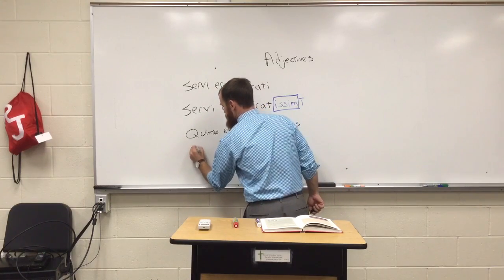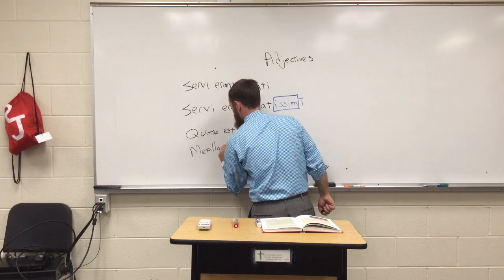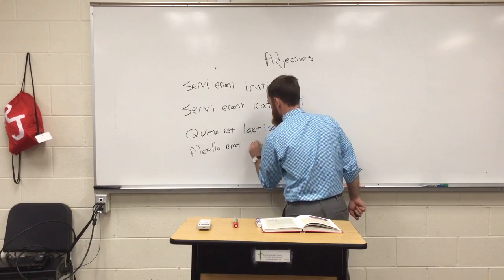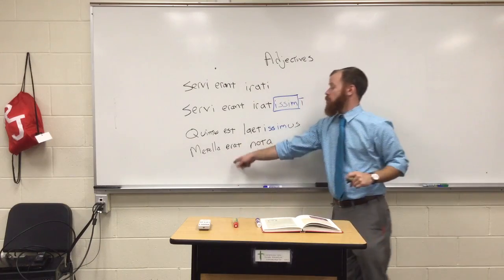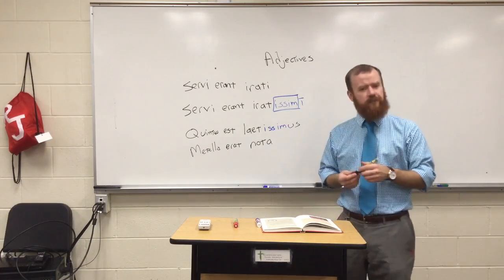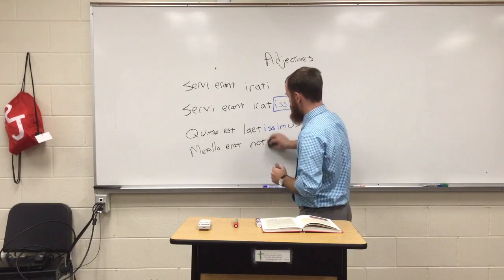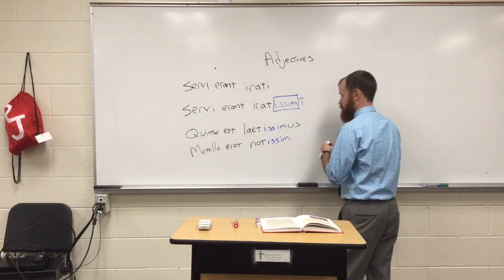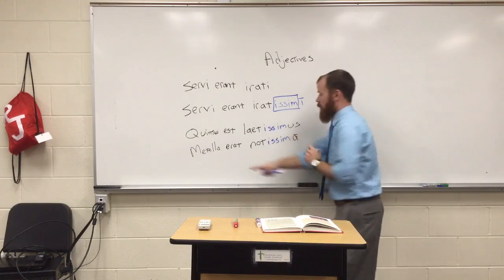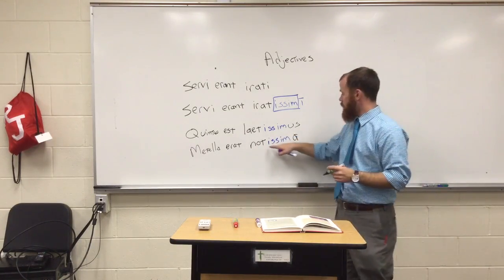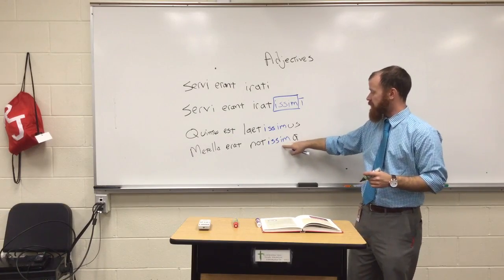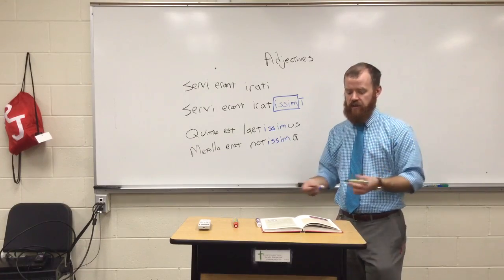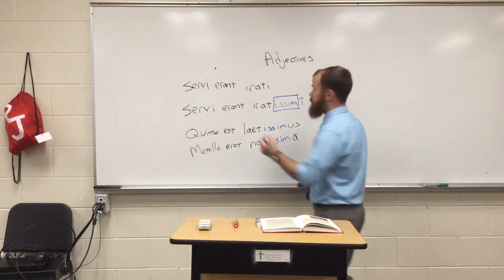Or say we are talking about Mattela — she was famous or well known. But we want to say she's very well known. All we have to add in is those letters '-issim-', and we have this new degree: we're able to say 'very [adjective]' in Latin.